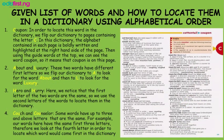Given a list of words and how to locate them in a dictionary using alphabetical order — the first one we have is 'coupon'. In order to locate this word in the dictionary, we flip the dictionary to pages containing the letter C. In this dictionary, the alphabet contained in each page is boldly written and highlighted at the right-hand side of the page. Then using the guide words at the top, we can see the word 'coupon', so it means that 'coupon' is on this page.